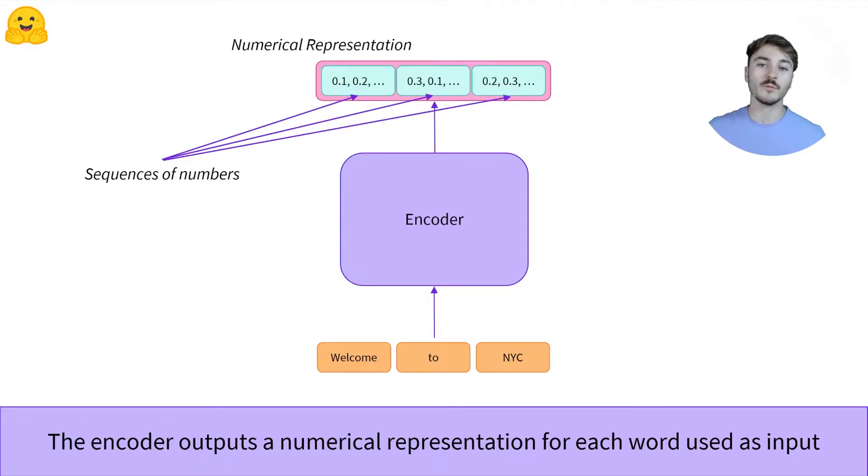The encoder outputs exactly one sequence of numbers per input word. This numerical representation can also be called a feature vector or a feature tensor.